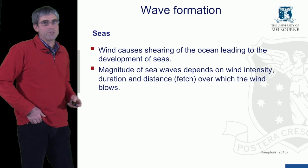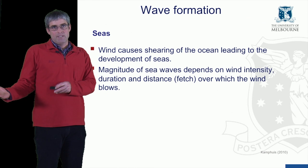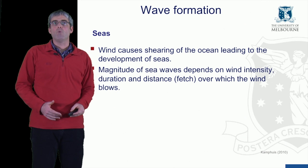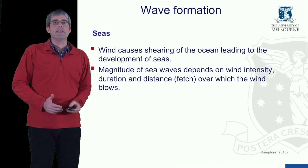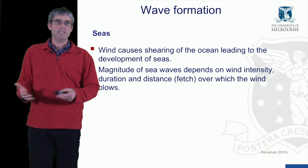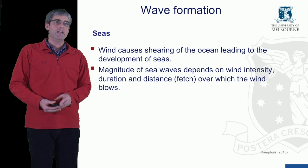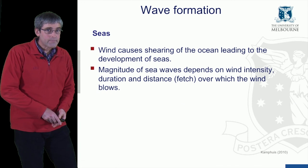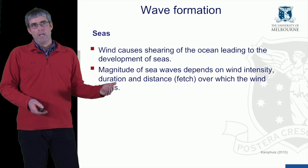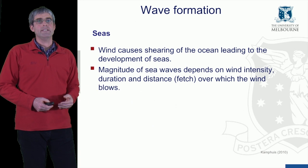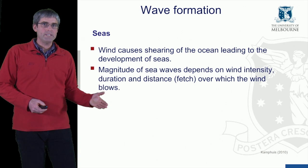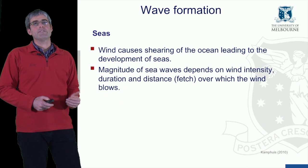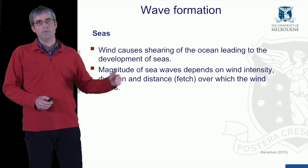Waves form in what's called sea — distinct from the common word meaning of sea. It refers to where waves are currently forming under the action of wind. Wind causes shearing at the ocean surface, leading to the development of seas. The magnitude of the sea wave depends on the wind intensity, how long it blows for (the duration), and the distance over which that wind blows, called the fetch.